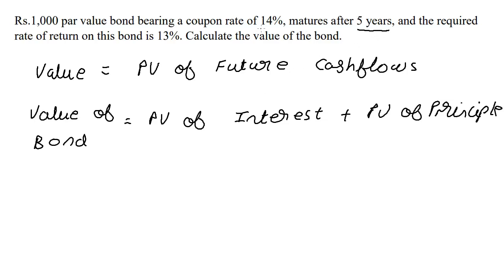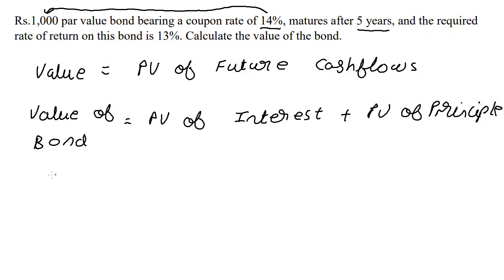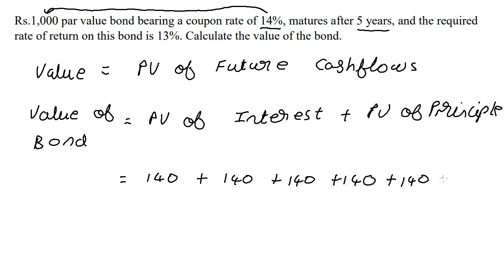For five years, at a coupon rate — in other words an interest rate — of 14%, we're going to be earning 14% of ₹1000, which is ₹140. On the calculator: 1000 × 14 / 100 = 140. That means we are going to be receiving ₹140 each year.